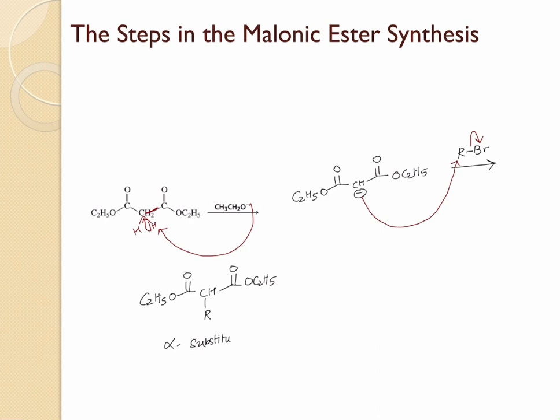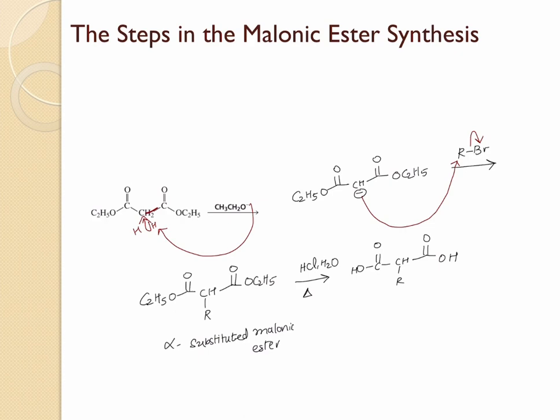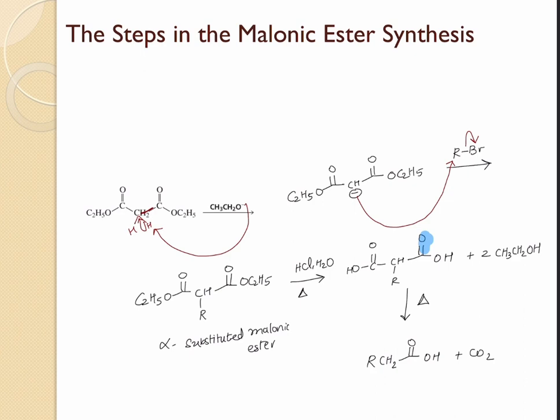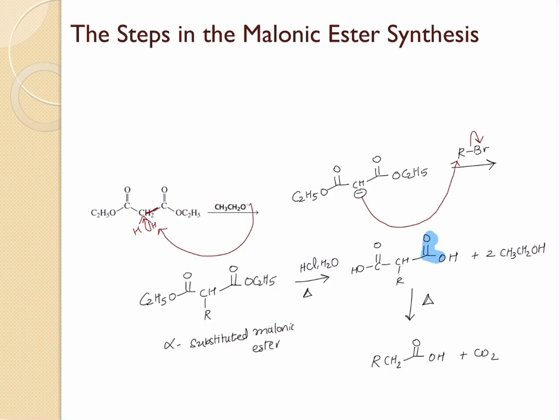In the next step, these two ester groups will be hydrolyzed to form a dicarboxylic acid. When ester hydrolysis happens, it results in a carboxylic acid and an alcohol — so here ethanol will be released. This step is followed by decarboxylation, where one of the carboxylic acid groups undergoes decarboxylation to give the product. The final carboxylic acid has two extra carbons coming from the malonic ester.